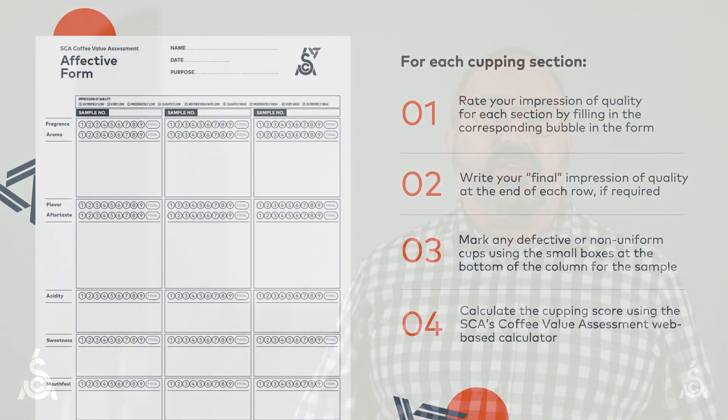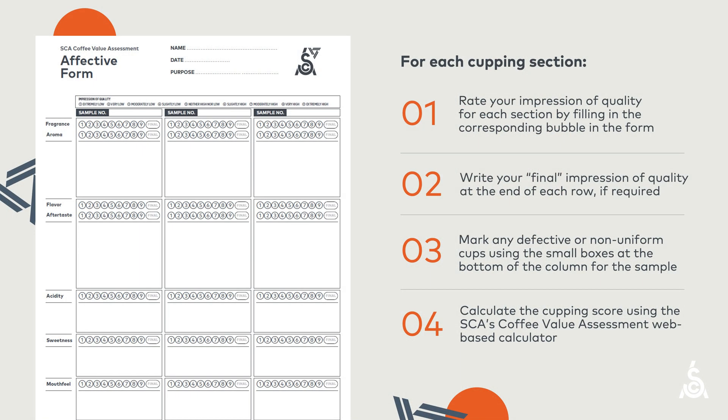Next, we reviewed the affective assessment, a method the CVA uses to assess acceptance, liking, or preference by asking you to rate your impression of quality for each category on a nine-point hedonic scale. This assessment also includes an overall impression of quality, defects, and uniformity.